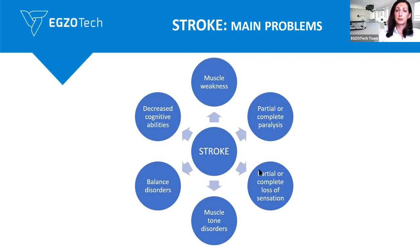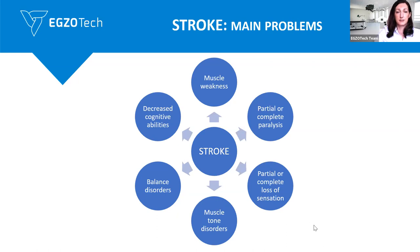Partial or complete loss of sensation — here we need to target the proprioception problem of our patient. Muscle tone disorders: we can talk about increased or decreased muscle tone, so we face mostly patients either with spasticity or with decreased muscle activity. Balance disorders are also part of stroke side effects, observable in patients who have a cerebellum stroke, and it's also connected with trunk muscle weakness.